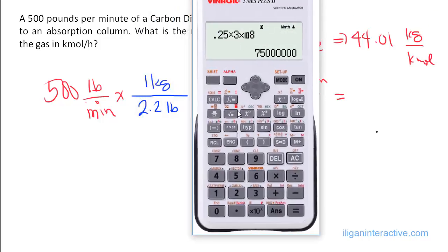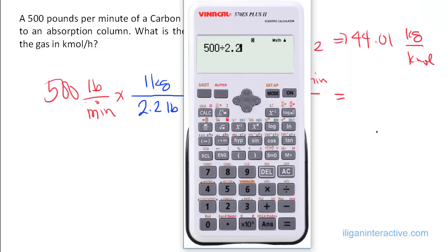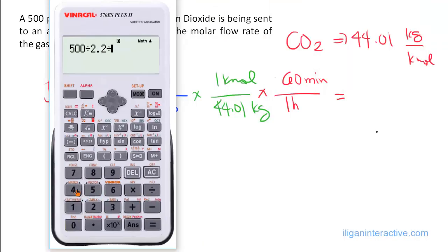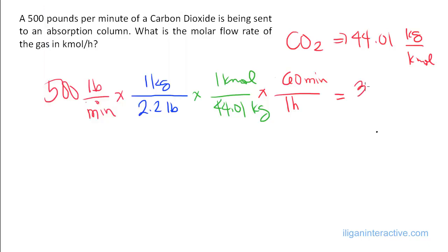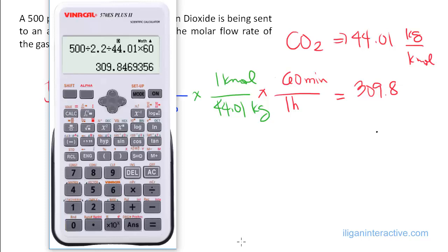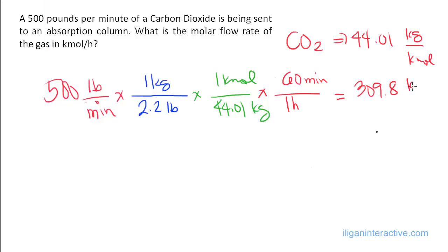We will then be having 500 divided by 2.2 divided by 44.01 times 60. And we got, from here, 309.8, 309.8 kilomole per hour. Kilomole per hour, so that's it.